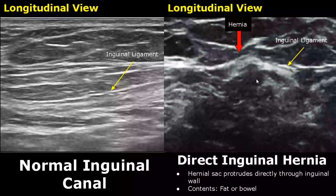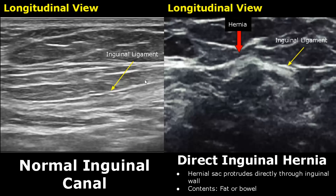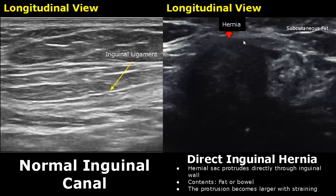Here is a longitudinal image of a normal inguinal canal — this is the inguinal ligament. Over here is a direct inguinal hernia; you can see an irregularity in the inguinal ligament — this is the hernia. The hernia will become more prominent with straining. Using the Valsalva maneuver will provoke the hernia, as intra-abdominal pressure is increased, which highlights the hernia.